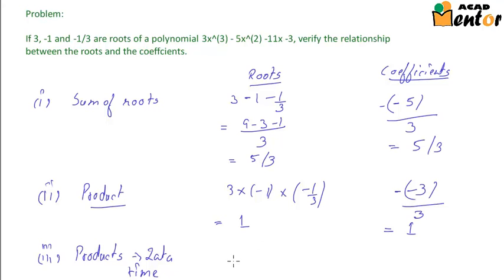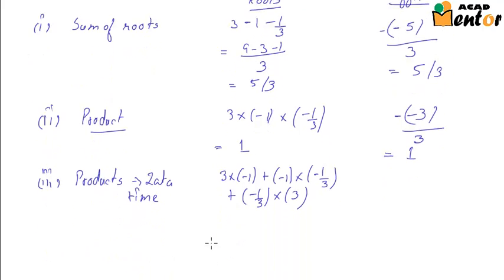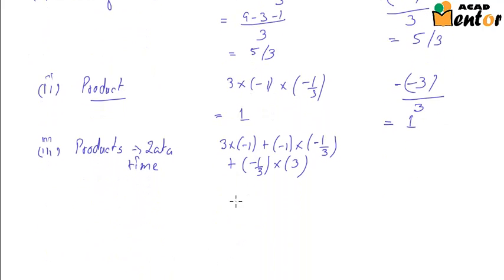This becomes: 3 times minus 1, plus minus 1 times minus 1/3, plus minus 1/3 times 3. This simplifies to minus 3 plus 1/3 plus minus 1.